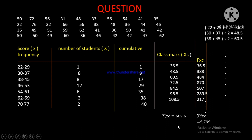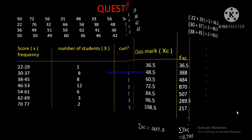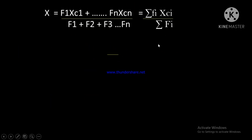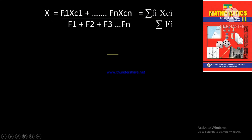The full grouped data mean formula is: mean equals f1·xc1 plus f2·xc2 plus ... plus fn·xcn, divided by f1 plus f2 plus f3. In summation notation, this is written as the summation of fi·xci divided by the summation of fi.